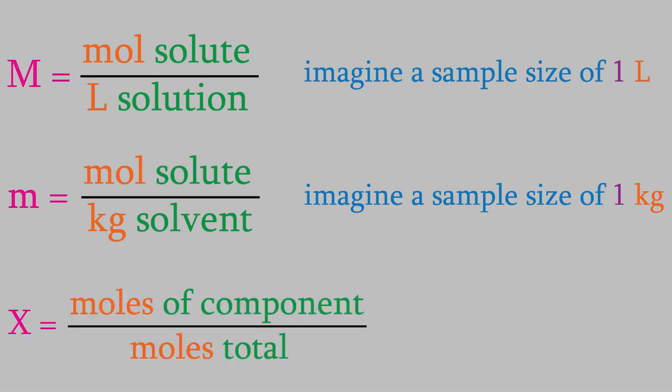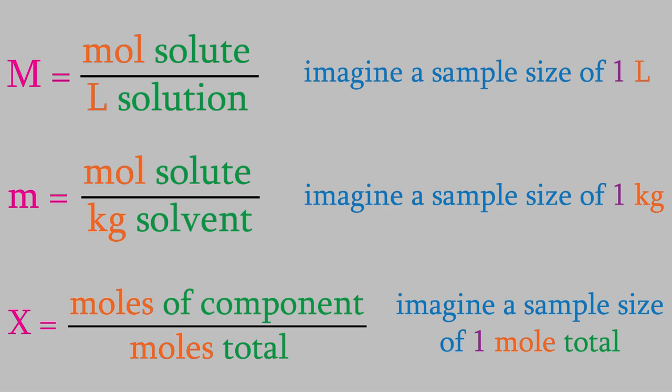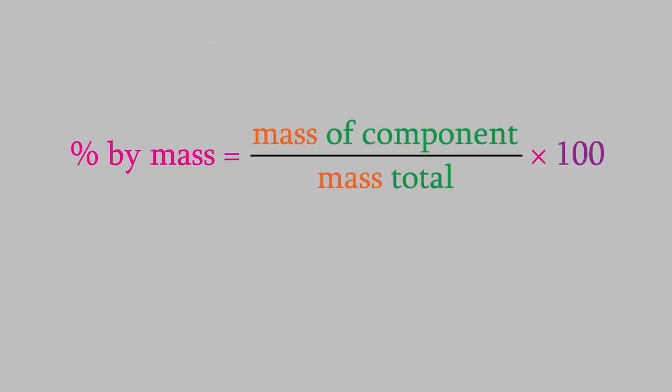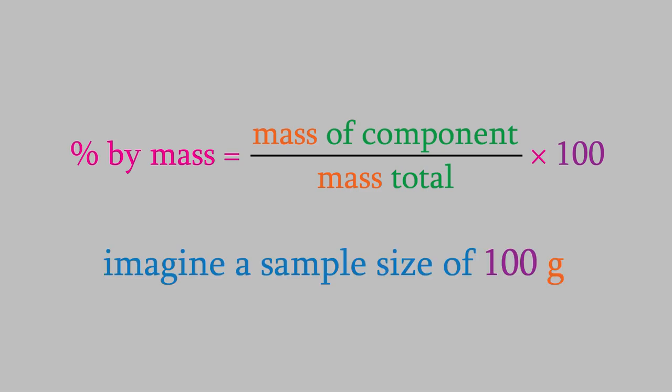If we were given the mass percentage of one of the components, I would pretend our sample was just the right size to weigh a total of 100 grams. Notice that in each of these examples, I chose a sample size that would give me a 1 in the denominator — that will always make our calculations a little easier.